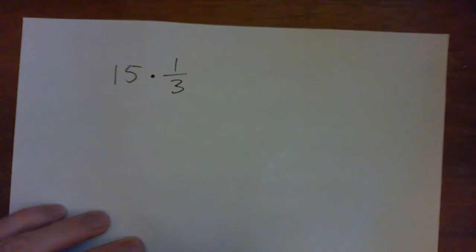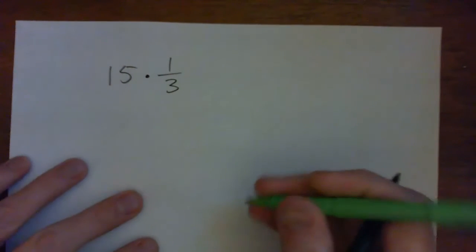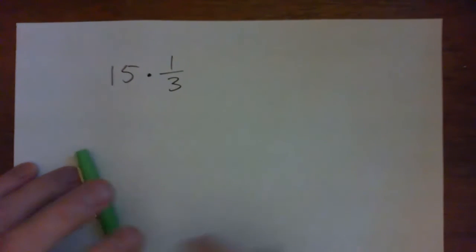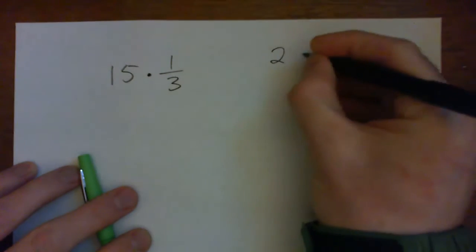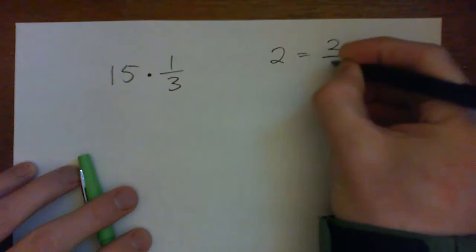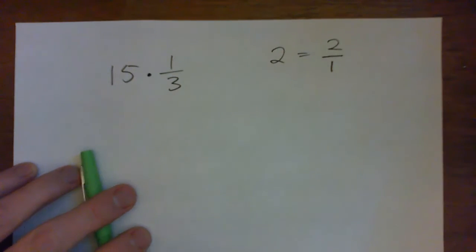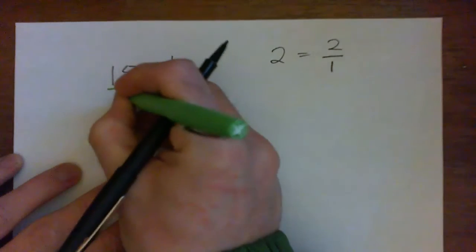The first thing we're going to do is turn 15 into a fraction. Now to turn a number into a fraction, like the number 2, you can just write it as 2 over 1. So we're just going to take 15, write it as 15 over 1.